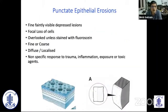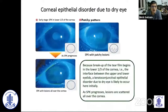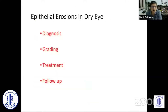As Srinivas showed us, we often look at these erosions when we try to do fluorescein staining. They could be very mild erosions in the lower part of the cornea or in the interpalpebral area. And then we could have very severe staining with large areas staining, and even filaments which might be there.